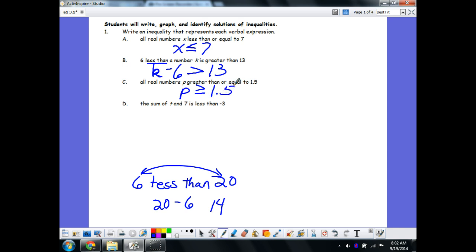And finally, part D: the sum of t and 7. Sum is an indication of addition, so t plus 7 is less than negative 3. Later on in the unit, we're going to talk about how we solve inequalities like those in B and D. In the next section, we're going to check numbers that may or may not be solutions to certain inequalities.